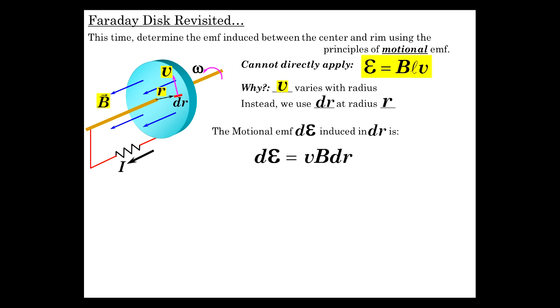The motional EMF differential E induced in dR equals V B dR. V is omega R, so this becomes omega R B dR. That's differential E.